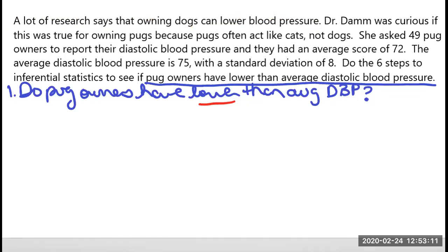Alright, so now I want to set up my null and alternative hypothesis. I'm going to do symbols this time. I like to do symbols on occasion just to make sure we are aware how to do that. So maybe we'll do this first one as the alternative. Do pug owners have lower than average blood pressure? So it's going to be the mu for the pug owners is lower than mu.